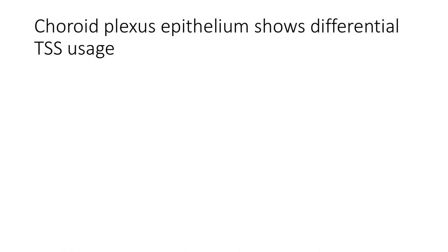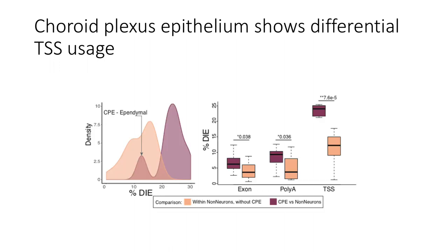So if you're looking at just the choroid plexus compared to the other non-neurons, comparisons involving the choroid plexus have a really high percentage of DIE, which is differential isoform expression, and what was more interesting is that it is usually the transcription start site which is responsible for these differences. So again this is not something that would have been picked up with regular single cell RNA sequencing.